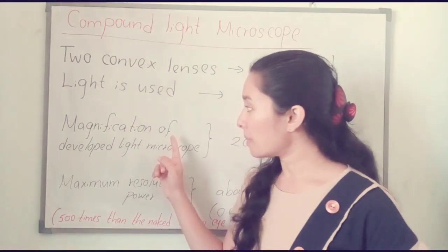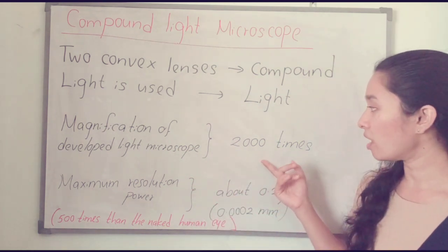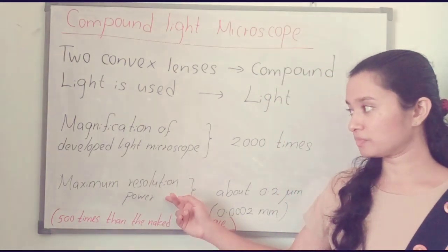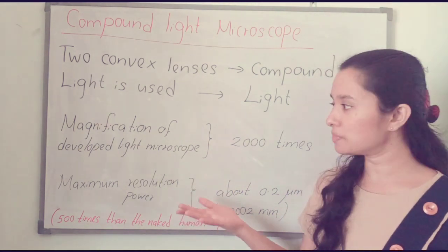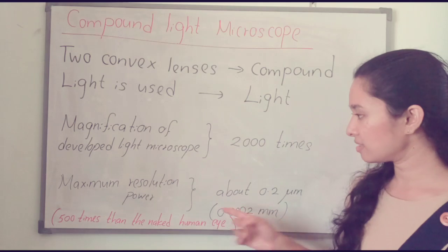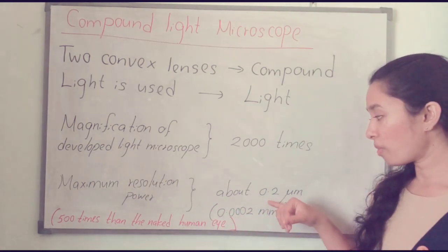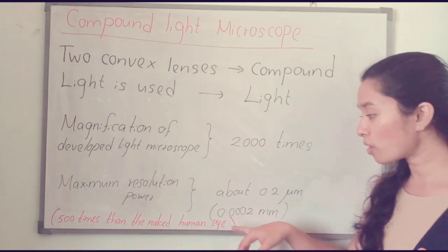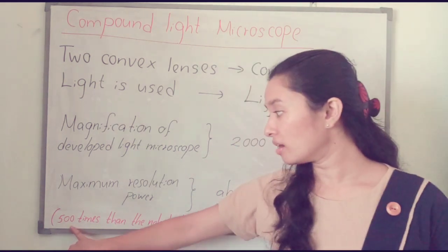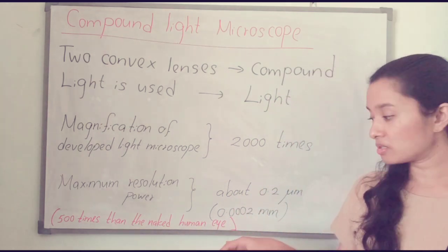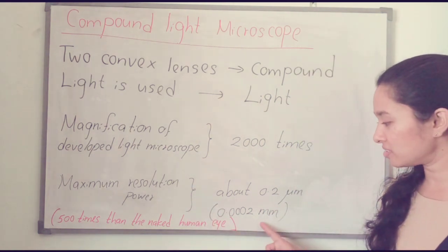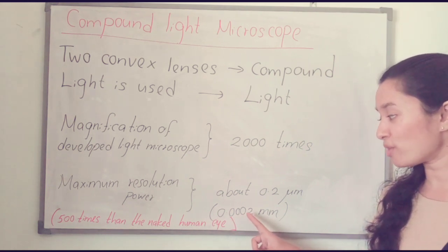What is the magnification power? The magnification of the compound light microscope is about 2,000 times. And the maximum resolution power is about 0.2 micrometers, which means 0.0002 millimeters. The resolution is 500 times higher than the naked human eye, which has a resolution of about 0.1 millimeters.